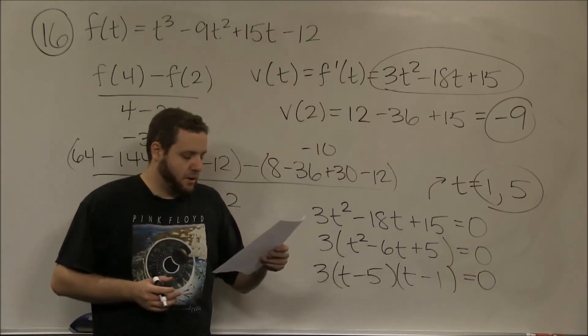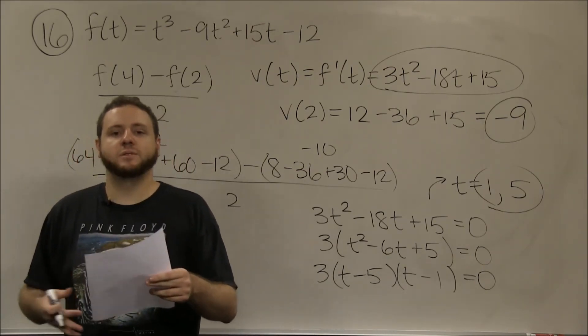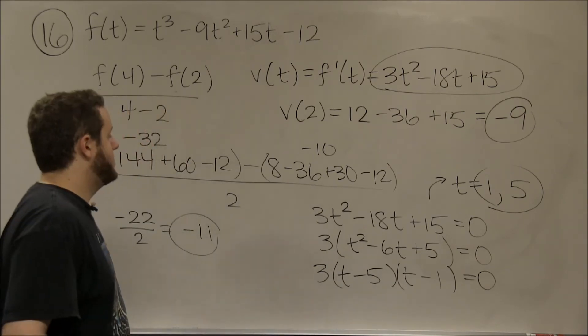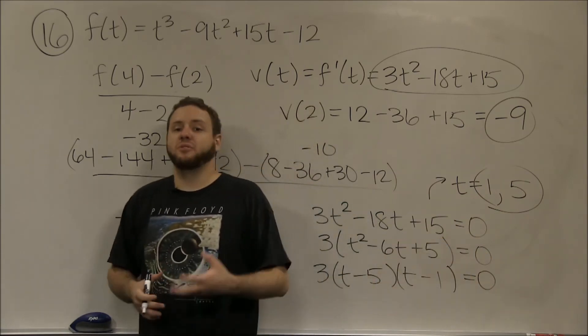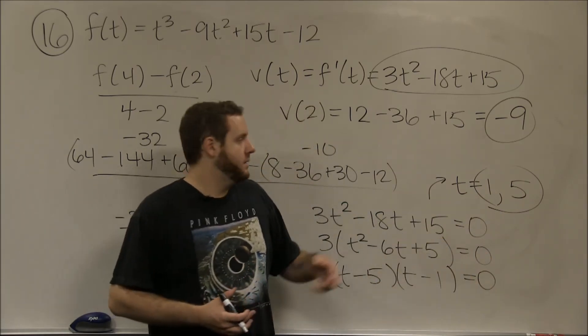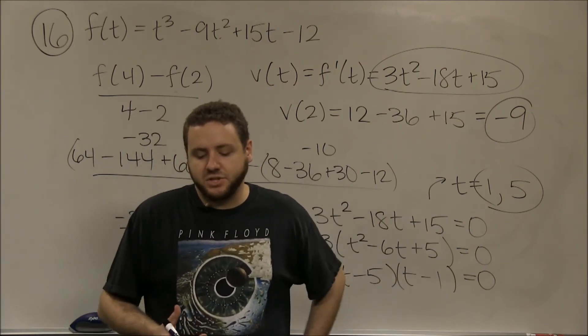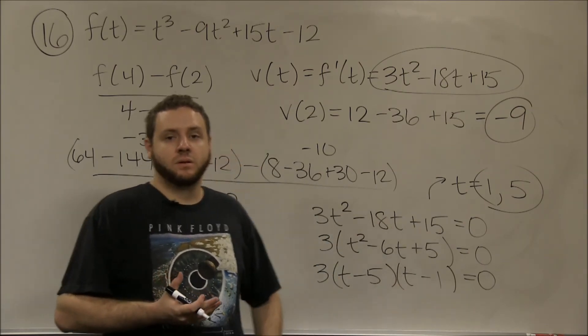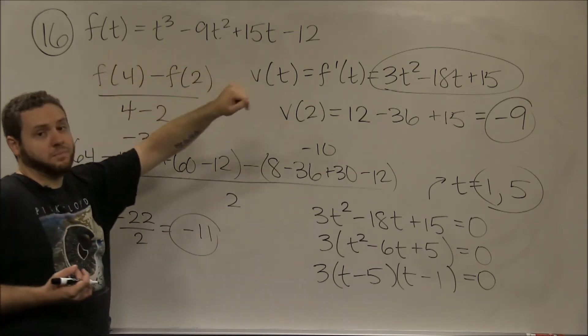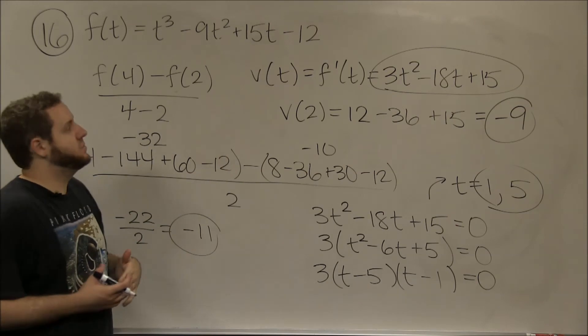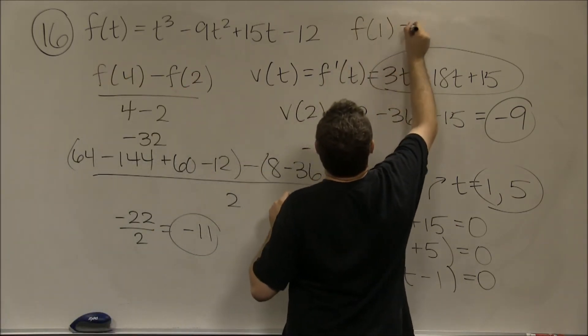Part e says, what is the position at the time the particle first comes to a stop? It's only at a complete stop at two times, t equals 1 and t equals 5. The first time it comes to a stop is t equals 1. So this question is asking us, what's the position at t equals 1? We have a function that gives us position, so the position when t equals 1 is just f(1).